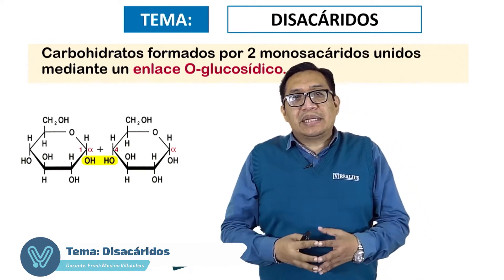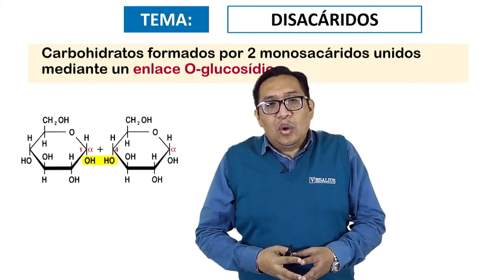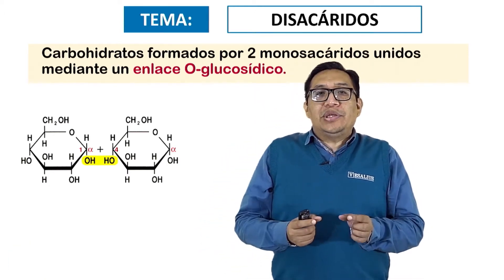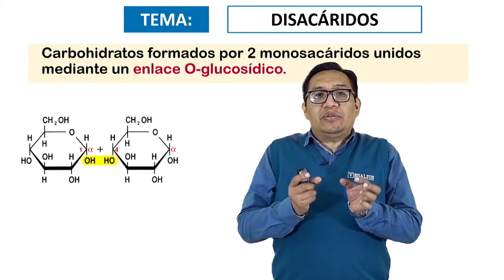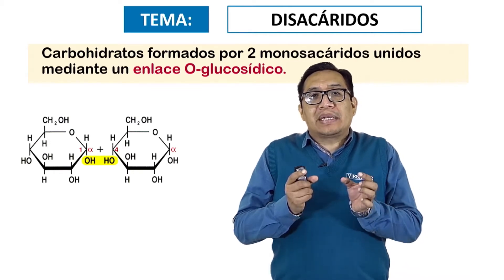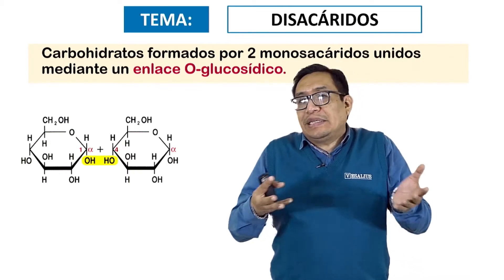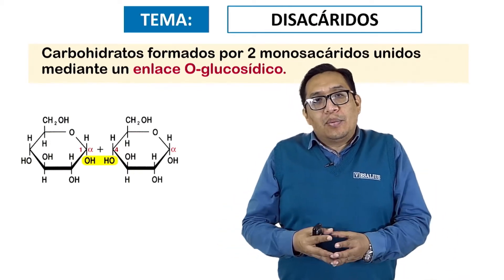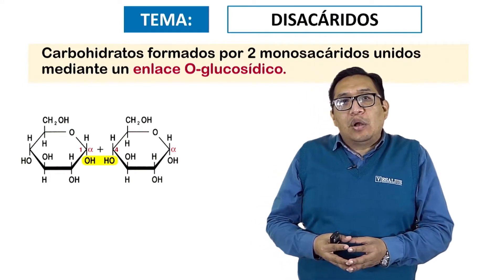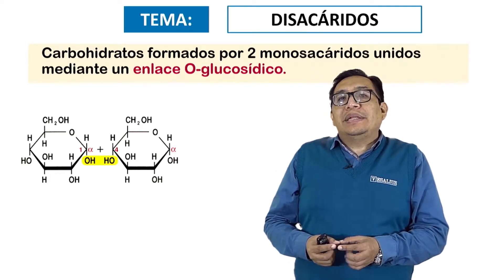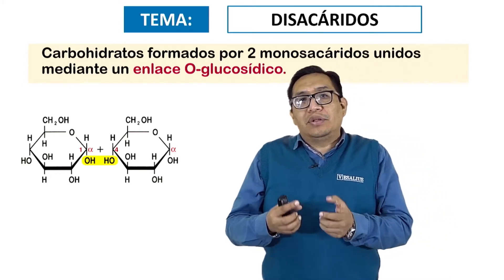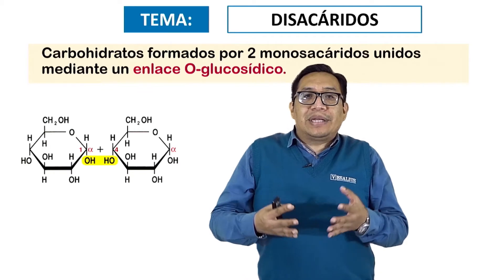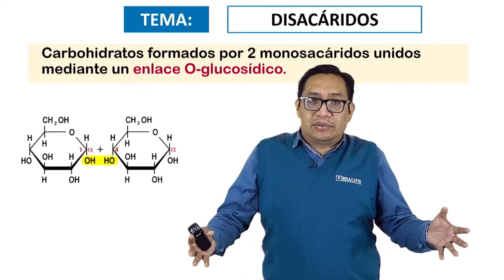¿Qué es un disacárido? Un disacárido no es otra cosa que la unión de dos monosacáridos. ¿Y qué son los monosacáridos? Los monosacáridos son los constituyentes básicos, fundamentales o monómeros de los carbohidratos.